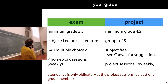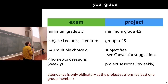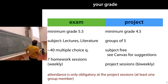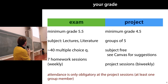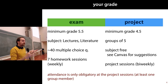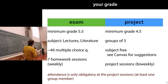The exam is a basic multiple choice exam of 40 questions, based on the lectures and the literature, which you can find on Canvas. You have to get a 5.5 or higher. You will be prepared for this exam both in the lectures and in your weekly homework sessions.